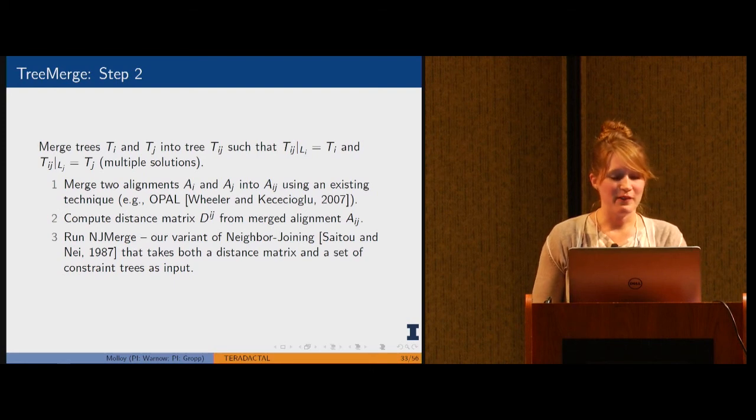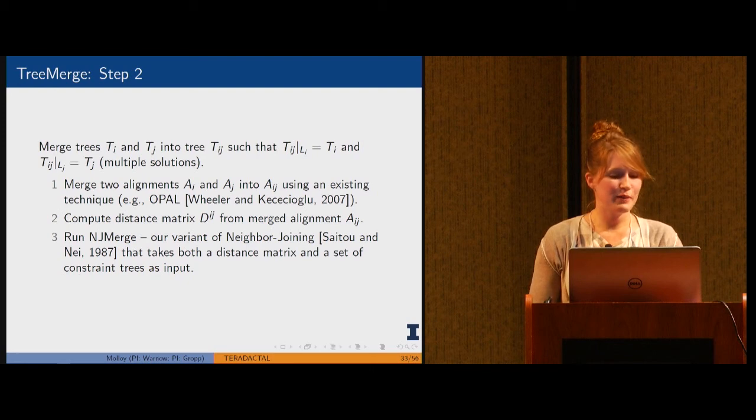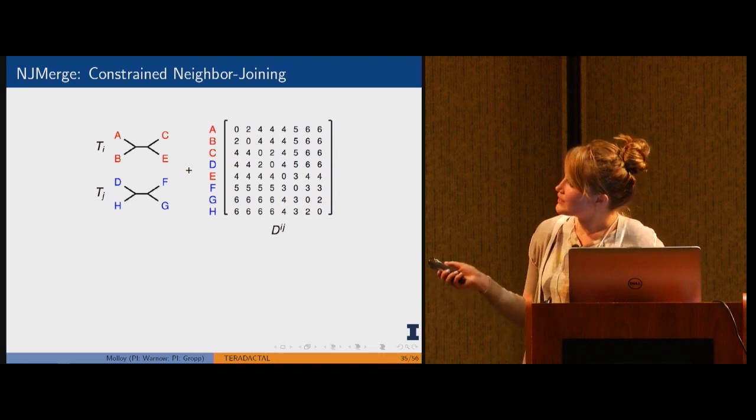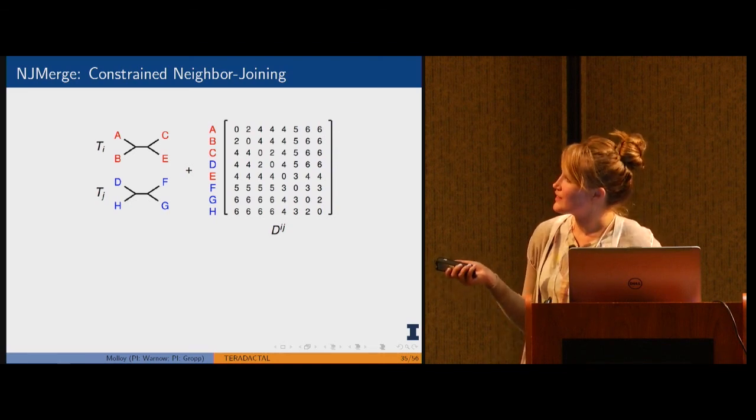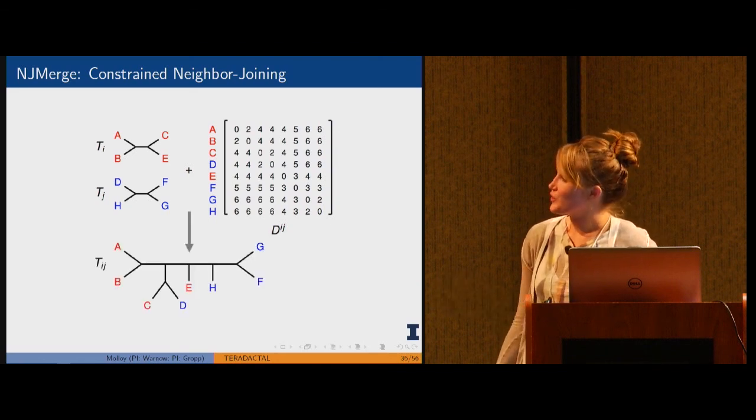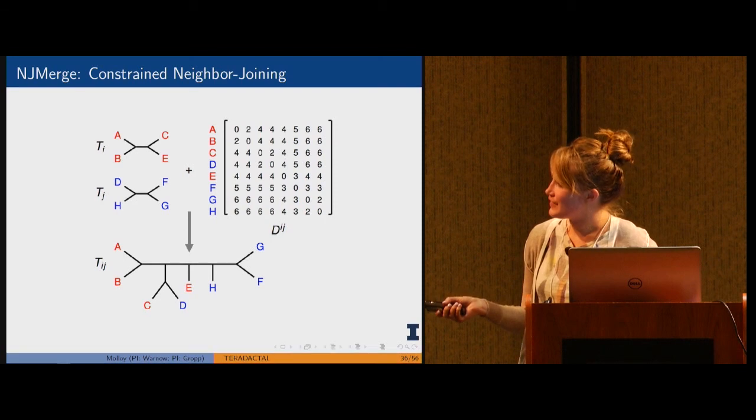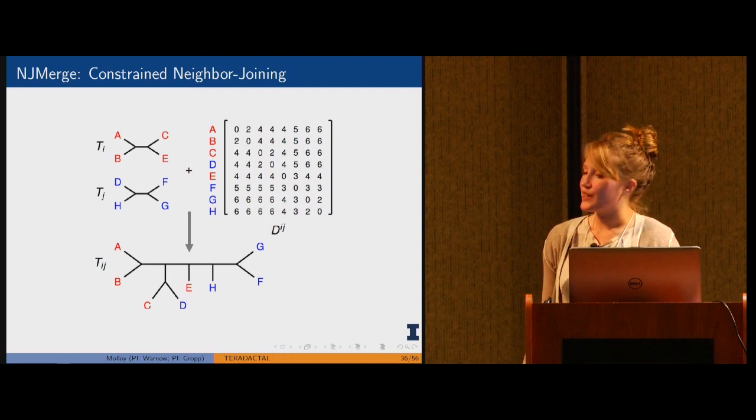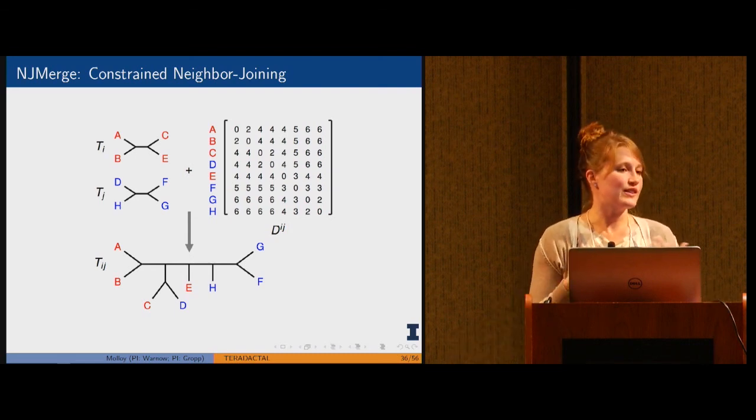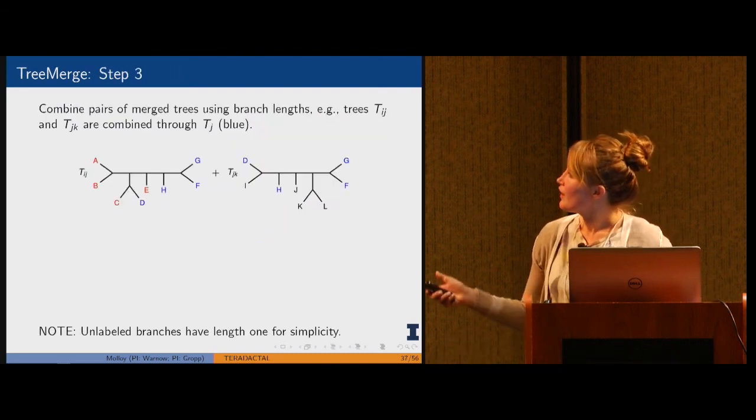We then compute a distance matrix on that merged alignment and run our variant of constrained neighbor joining. It basically takes that merged distance matrix and Ti and Tj as input, and gives you this tree where we now have the leaves on Ti and Tj in one tree. We use the distance matrix to merge these in a sound fashion because this problem would have many solutions, and we use the distance matrix to get a good solution.